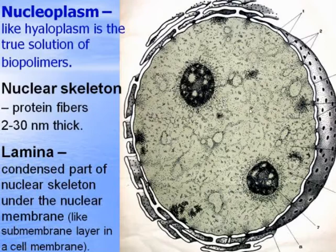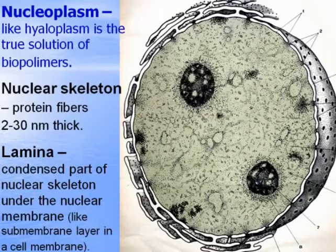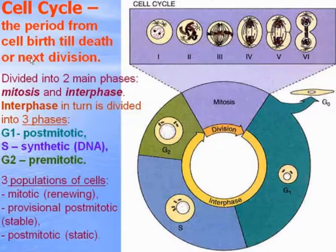Nucleoplasm, like hyaloplasm, is the true solution of biopolymers. Nucleoskeleton consists of protein fibers up to 30 nanometers thick, and the lamina, which is the condensed part of the nuclear skeleton located just under the nuclear membrane — like a submembrane layer in the cell membrane. It provides the shape of the nucleus.